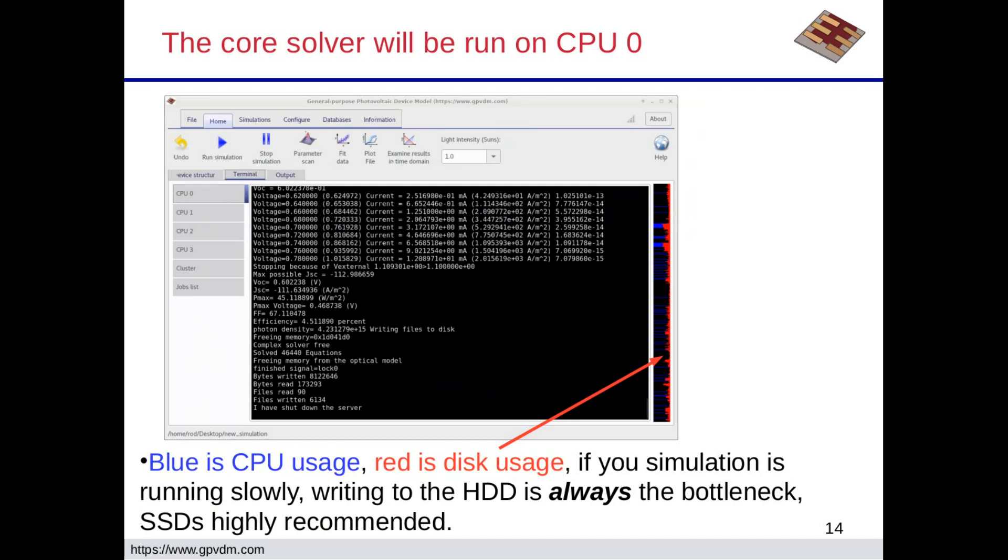So on the right, just to sort of highlight this, when it was running on the right it had basically CPU and disk usage. The red is the disk, I think, yeah, the red is the disk usage and the blue is the CPU, or it might be the other way around. I can't remember. But that sort of does it.